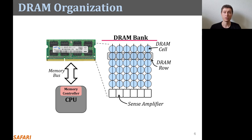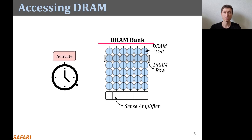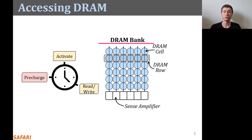Now let's look at DRAM commands that the memory controller issues to access the DRAM. To perform an access, the memory controller first activates or opens a row by issuing an activate command. The activate command loads the row's data into the sense amplifiers where the data can be accessed. After the row is accessed, the memory controller issues a precharge command to close the open row so that a new row can be activated. This is basically how DRAM is accessed.